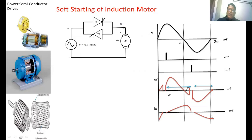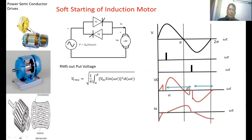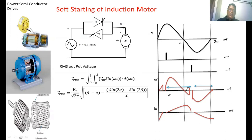To find the RMS output voltage we need to find the area of the square of the curve. This is representing Vm sin(ωt). The RMS output voltage is equal to 1 by pi, where pi is the base length of the repeated curve, integrated from alpha to beta of Vm sin(ωt) squared d(ωt), whole square root. This integration gives the area under the square of the curve divided by the base length, and taking the whole root gives the RMS output voltage. If we compute this integration, we get V_rms equal to (Vm / √(2π)) times the square root of (beta minus alpha minus sin(2α) minus sin(2β) divided by 2). From this equation, as the firing angle increases the RMS output voltage decreases.